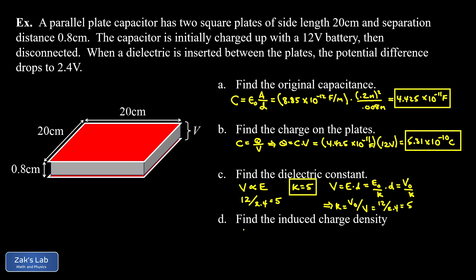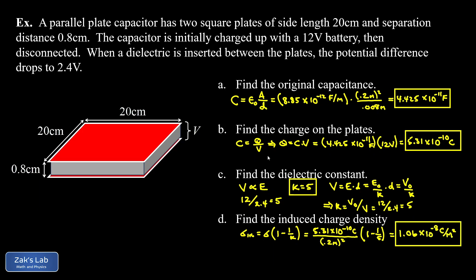Finally, we find the induced charge density using the formula sigma_induced equals sigma times (1 − 1/kappa). We compute the original surface charge density by taking the total charge — 5.31 times 10^−10 coulombs — divided by the plate area of 0.2 meters squared. We then multiply by (1 − 1/5), and running the numbers gives approximately 1.06 times 10^−8 coulombs per square meter.